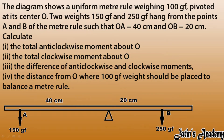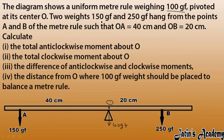The diagram shows a uniform meter rule weighing 100 gram force, which acts at the center O. The rule is pivoted at O. Two weights — 150 gram force and 250 gram force — hang from the rule. OA is given as 40 centimeters and OB is given as 20 centimeters.